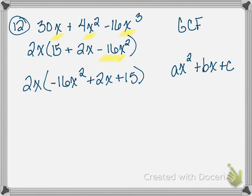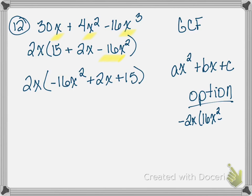There's also an option to factor out a negative 2x instead, giving 16x squared minus 2x minus 15 inside — that's equally valid. We'll proceed with our current arrangement. The product is negative 16 times positive 15, which is negative 240. Our sum is 2. Because the product is negative, we need one positive and one negative number, and because the sum is so low, the two numbers will be very close together.